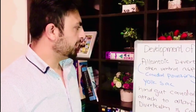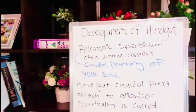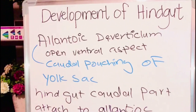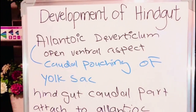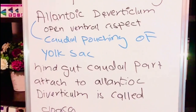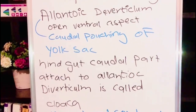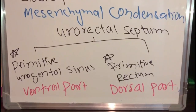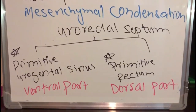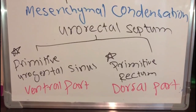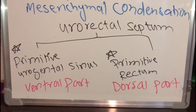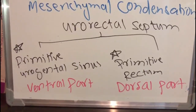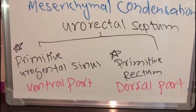The allantoic diverticulum opens in the ventral aspect. The allantois is an outpouching of the yolk sac from the caudal side. The caudal part of the hindgut is attached to the allantoic diverticulum. This is called the cloaca. Mesenchymal condensation occurs due to this, forming the urorectal septum.